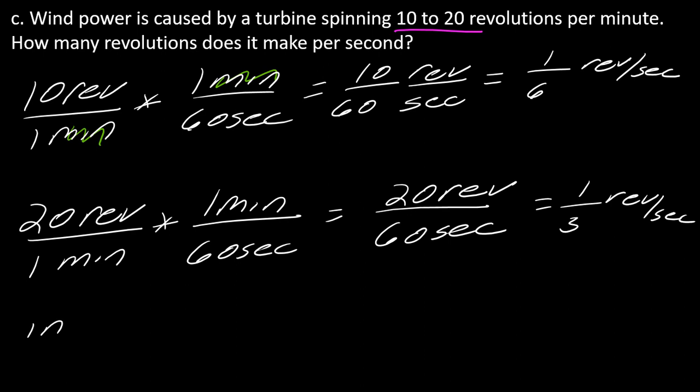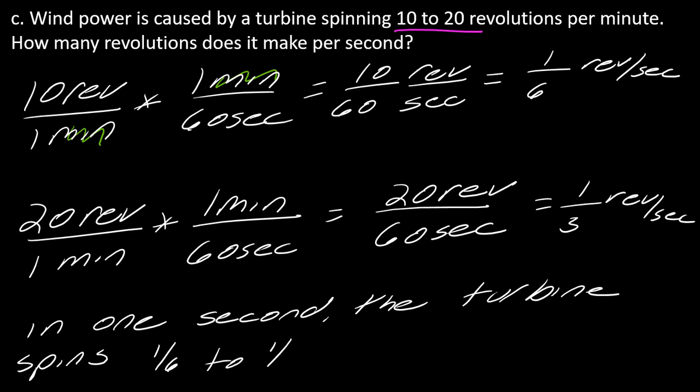So in one second, the turbine spins anywhere from - start with the smaller one first - one-sixth to one-third a revolution per second. And that's it, that's how you can approach those problems.